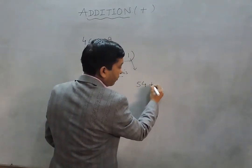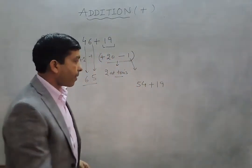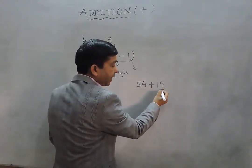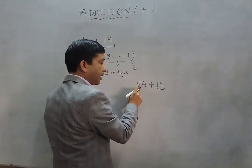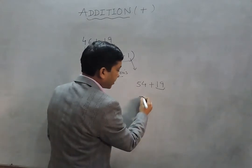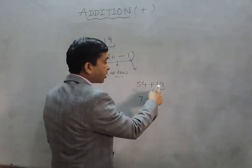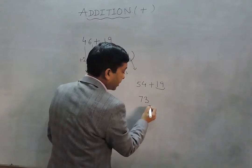Again we're saying we have to add 2 to the tens place, it becomes 7, and then we subtract 1 from the units place, and that is 3.